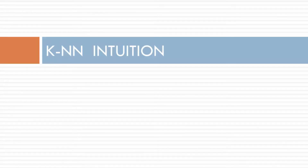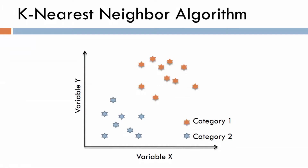Hello and welcome back to our next lecture. We will be talking about the K-Nearest Neighbors algorithm. Let's assume a scenario where our dataset contains data points for two categories, represented by different colors. The data points corresponding to category one are orange, on the right side, and category two is blue, on the left side of the plot.